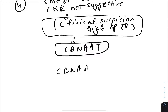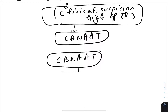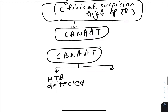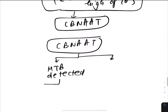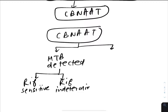CBNAAT — Cartridge Based Nucleic Acid Amplification Test — is performed on the sputum sample. When Mycobacterium tuberculosis is detected, it also tells you whether it is rifampicin sensitive, rifampicin indeterminate, or rifampicin resistant. These three conditions come out when MTB is detected.